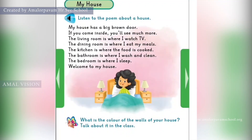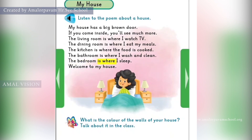Listen to the poem about a house. My house has a big brown door. If you come inside, you'll see much more. The living room is where I watch TV. The dining room is where I eat my meals. The kitchen is where the food is cooked. The bathroom is where I wash and clean. The bedroom is where I sleep. Welcome to my house.